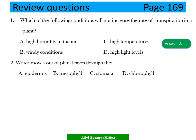Question 2: Water moves out of the plant leaves through — A) epidermis, B) mesophyll, C) stomata, D) chloroplast. The answer is C — stomata. Water vapor moves out of the plant through the stomata.